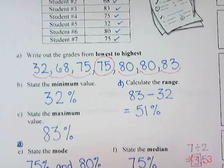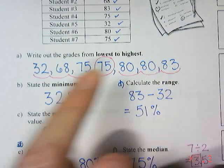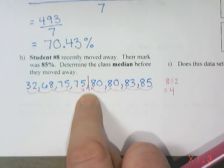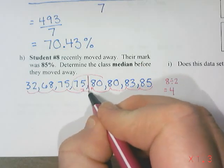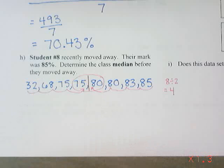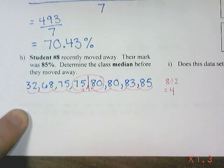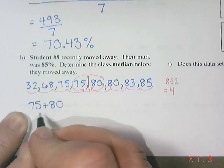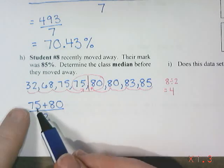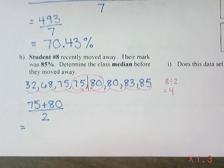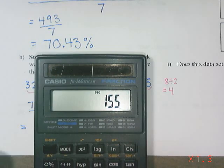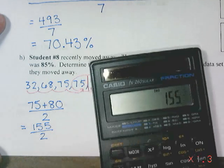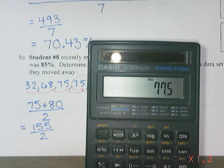When you have an even number of values in your data set, the median falls between the two middle numbers. So the median is not 75 or 80, but the number halfway between them. To find it, I add 75 plus 80 to get 155 and divide by 2. 155 divided by 2 is 77.5 percent.